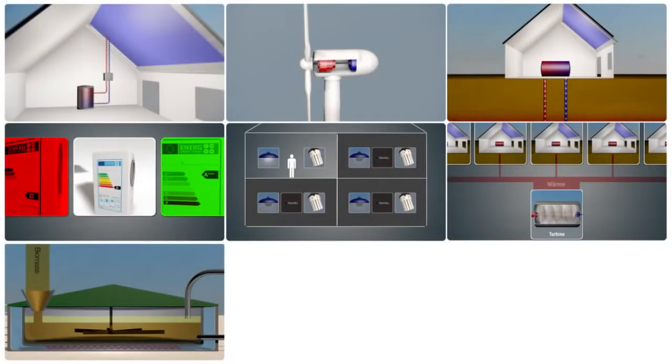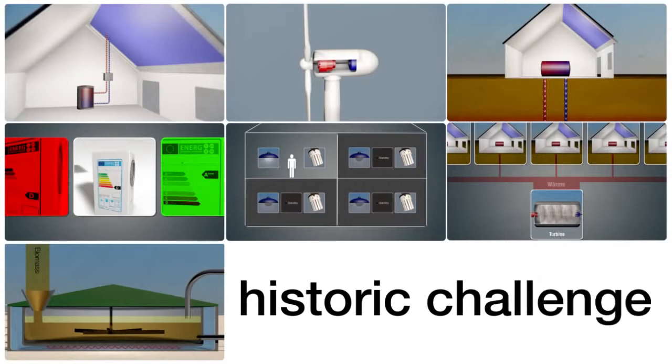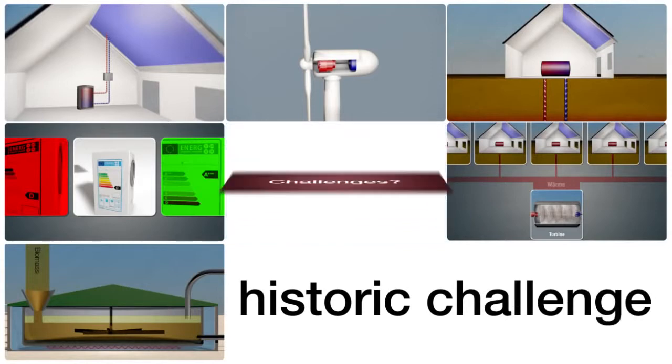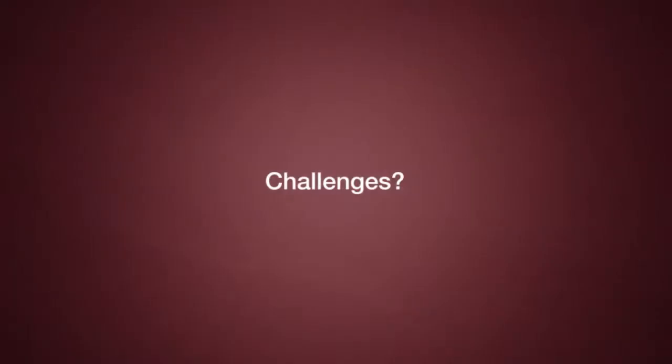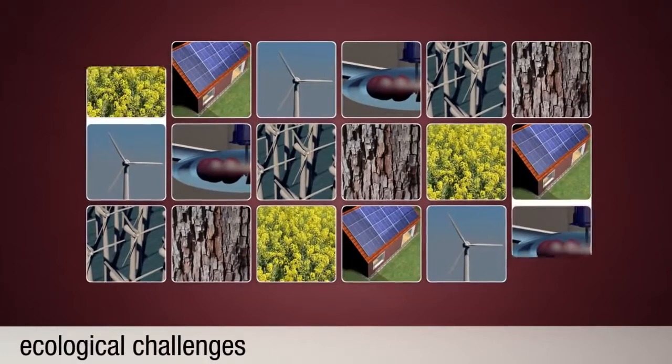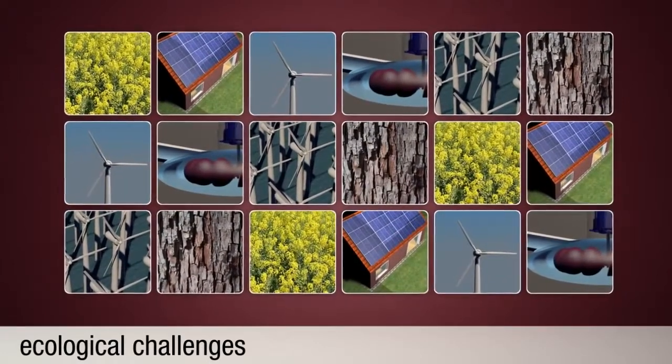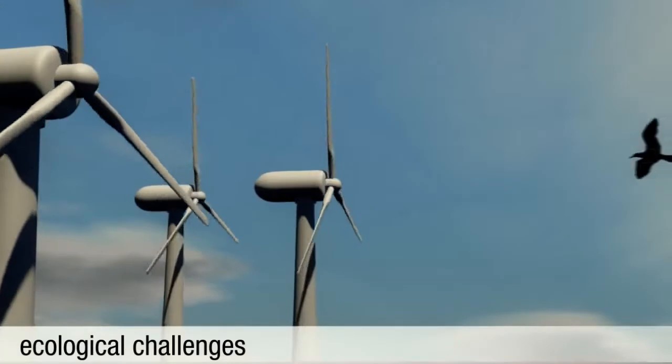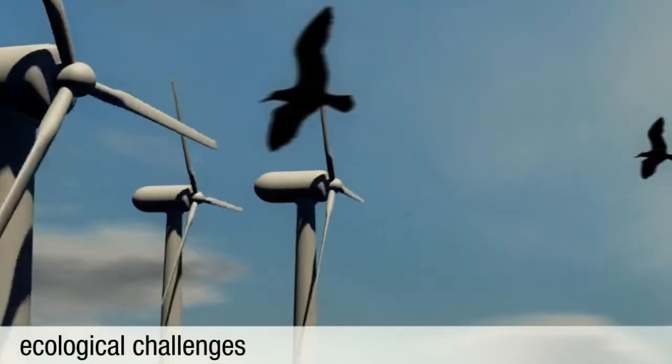The energy transition is a very complex challenge. What are the difficulties? The use of renewable energy can have negative ecological consequences. Occasionally, the interests of nature conservation conflict with the production of green power. Wind and hydroelectric power plants may damage the habitats of birds and fish.